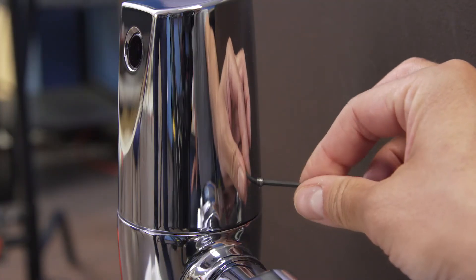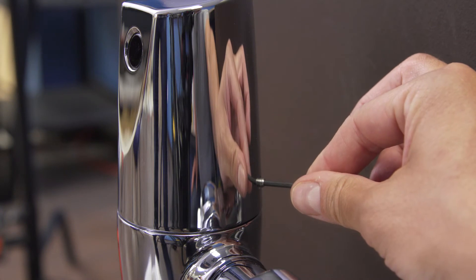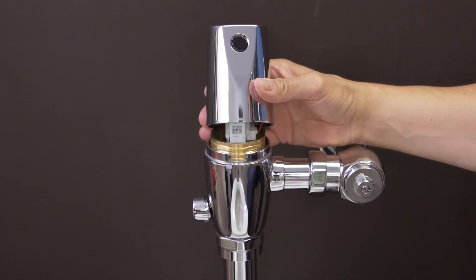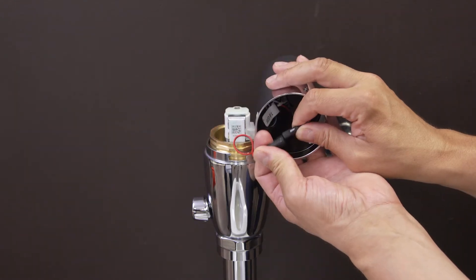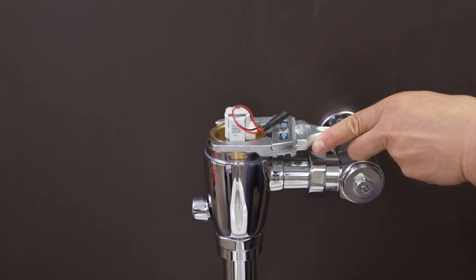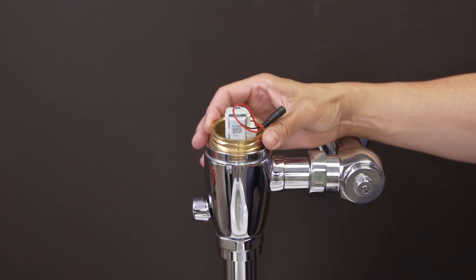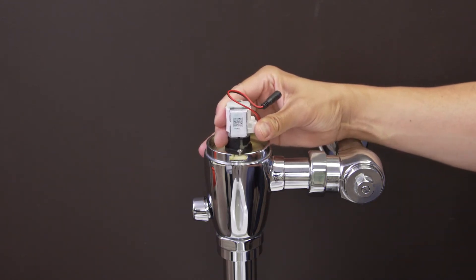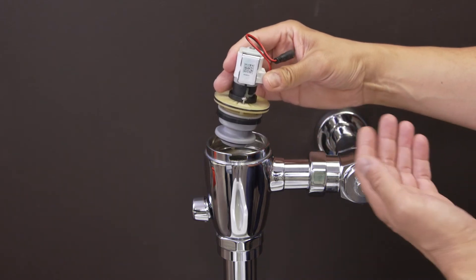Use a 2.5mm hex wrench to loosen the set screw on the back of the cover. Now lift up the cover and unplug the solenoid. Use the smooth jaw wrench to remove the bonnet nut. Gently rock the solenoid back and forth and lift up to remove.